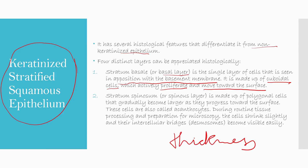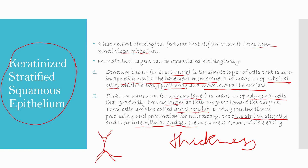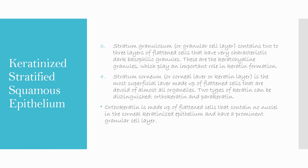The stratum spinosum or spinous layer is made up of polygonal cells that gradually become larger as they progress towards the surface. These are also called acanthocytes. During routine tissue processing, the cells shrink slightly and their intercellular bridges — called desmosomes — which help in communication, become easily visible. The stratum granulosum or granular cell layer contains two to three layers of flattened cells with characteristic dark basophilic keratohyalin granules.